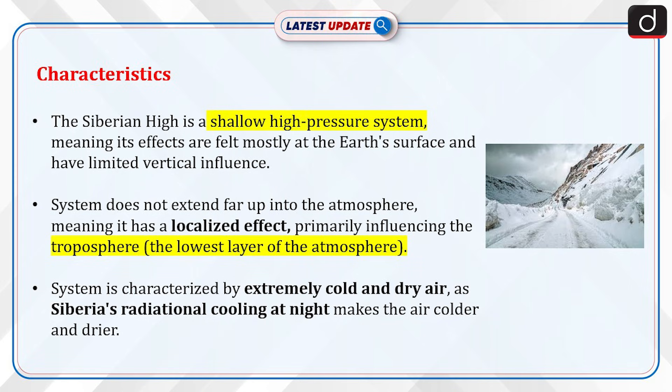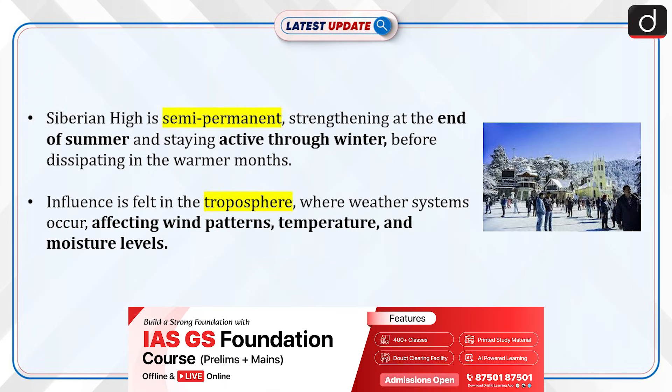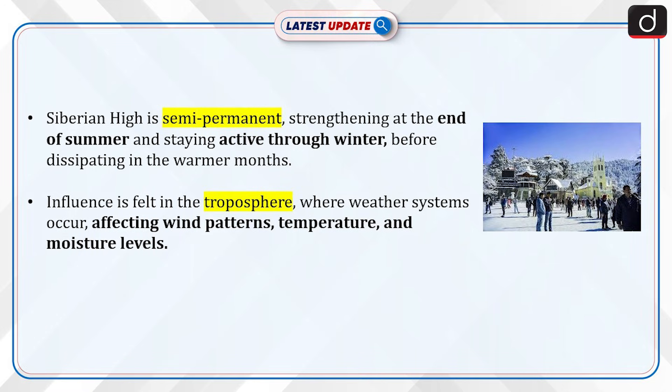The system is characterized by extremely cold and dry air, as Siberia's radiational cooling at night makes the air colder and drier. The Siberian High is semi-permanent, strengthening at the end of summer and staying active through winter, before dissipating in the warmer months.